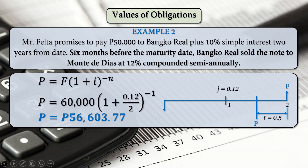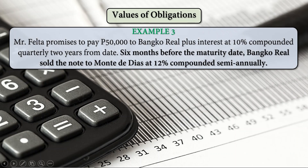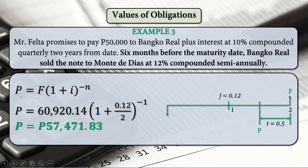For our third example, using the compound present value formula again: F is 60,920 pesos and 14 centavos times (1 plus 0.12 divided by 2) raised to negative 1. Our present value is 57,471 pesos and 83 centavos — that is P, 6 months before the maturity date.